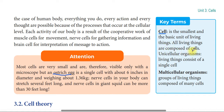All living things are composed of cells - living things are based on cells. A unicellular organism is a living thing that consists of a single cell. A multicellular organism is a group of living things composed of many cells.